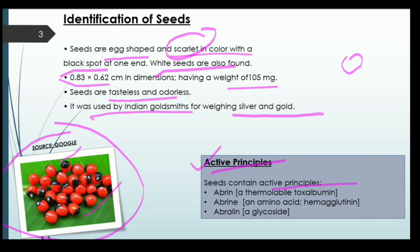Now, talking about the active principles: seeds of Abrus precatorius commonly contain abrin, abrine, and abriline. Abrin is a thermostable toxalbumin — being thermostable means it can withstand high or low temperatures without being harmed. Abrine is a kind of amino acid and also shows the property of hemagglutination, meaning agglutination of blood. Abriline is a glycoside — a naturally occurring substance in which a carbohydrate portion contains one or more sugars.